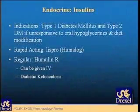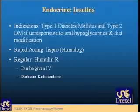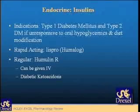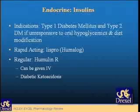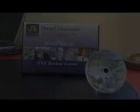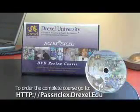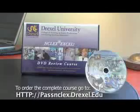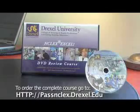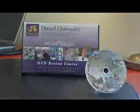The indication for insulin is type 1 diabetes and type 2 diabetes if patients are not responsive to oral hypoglycemics and diet modification. Remember for type 2 diabetes, we're seeing it more frequently even in children, and it's usually related to obesity, so we can often correct it with diet and exercise.